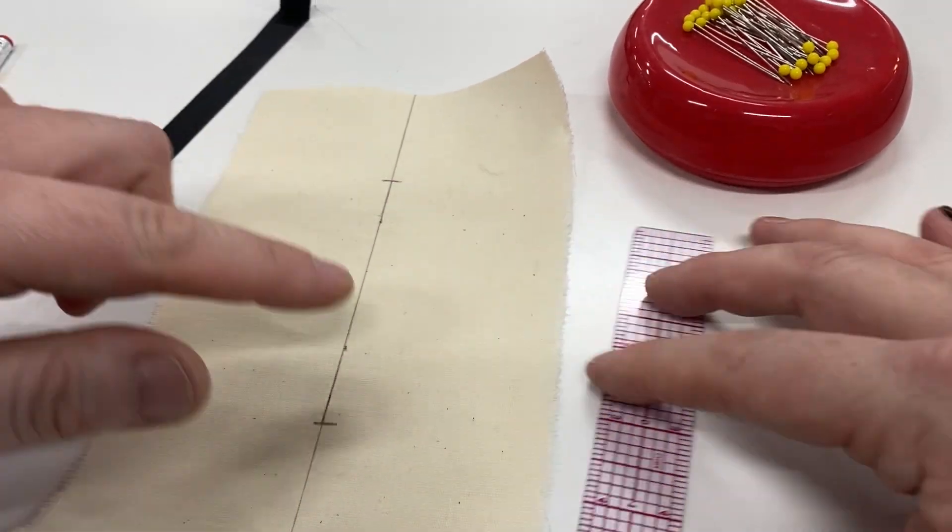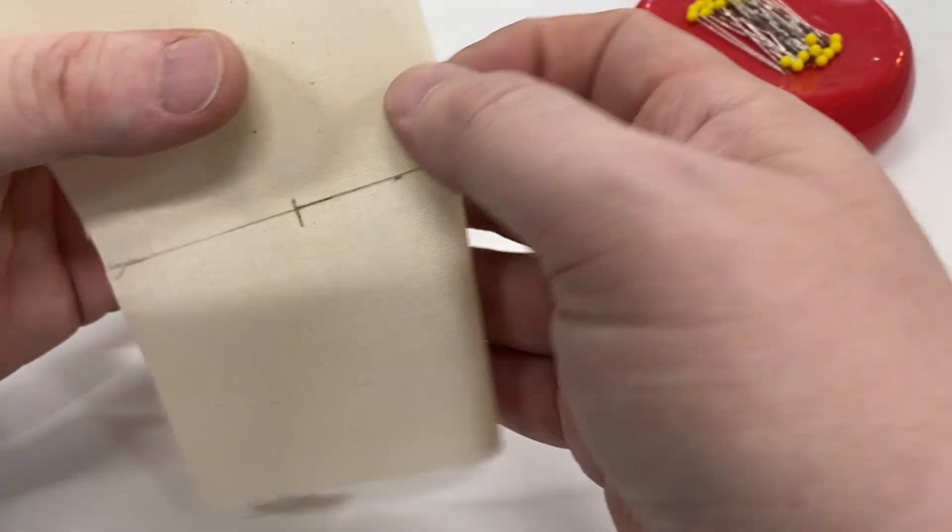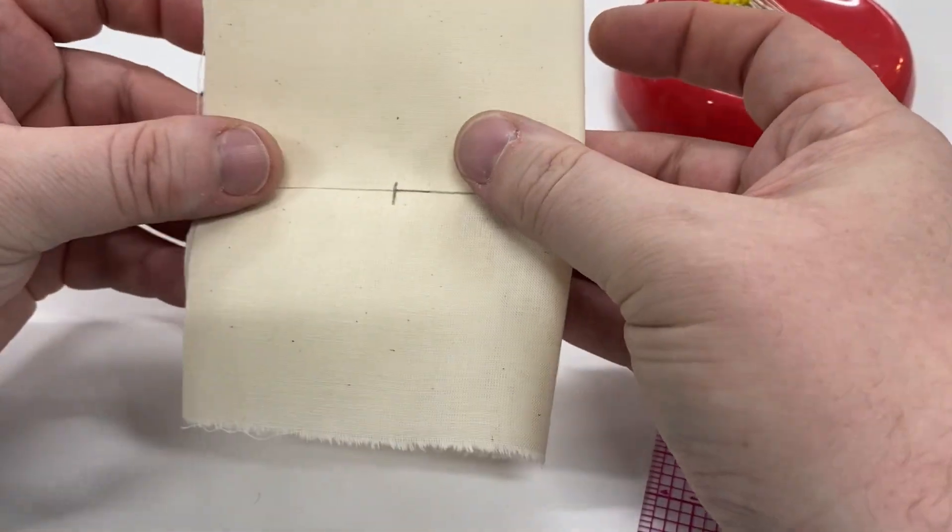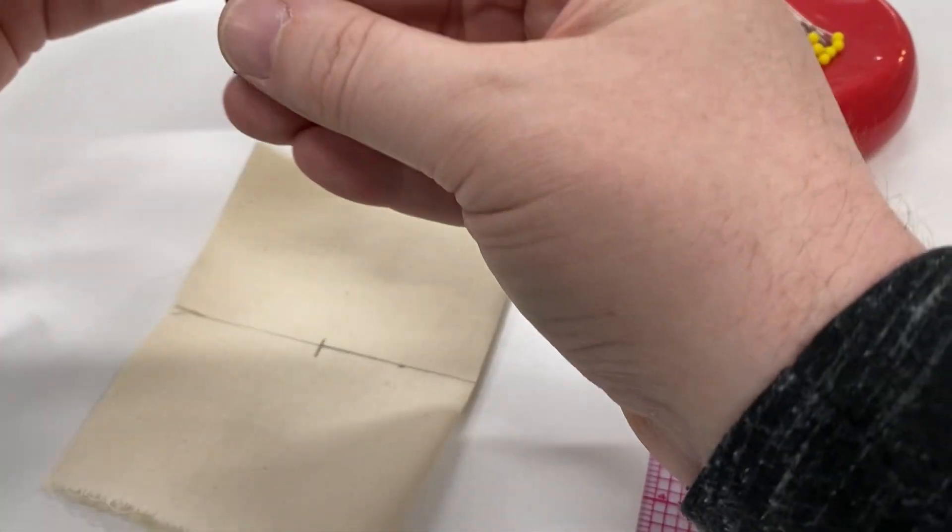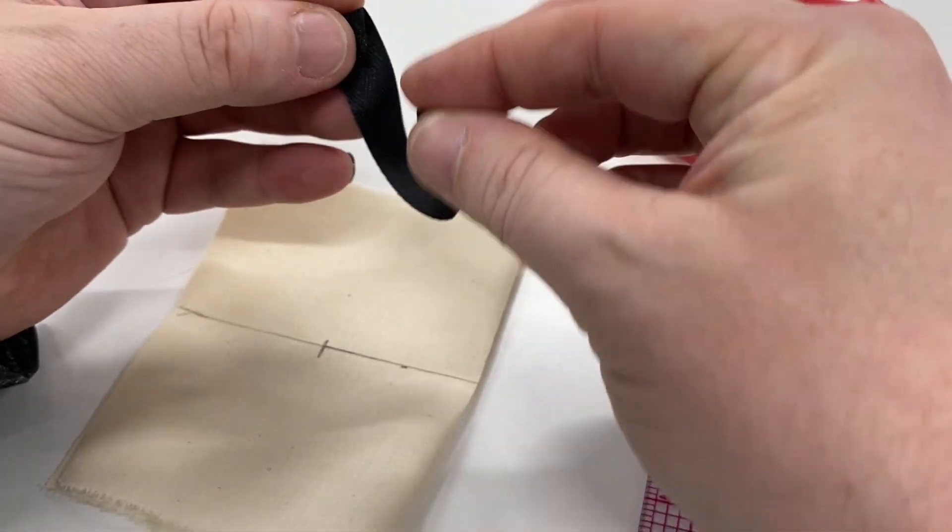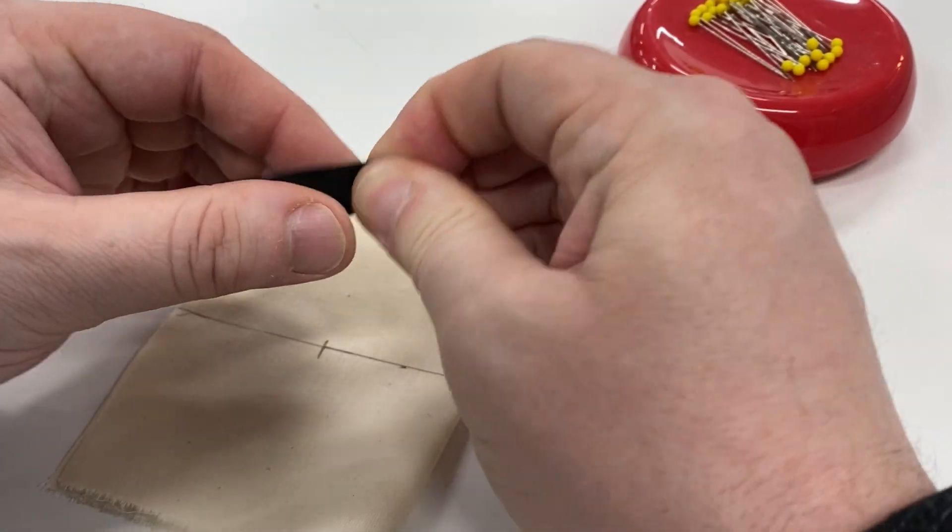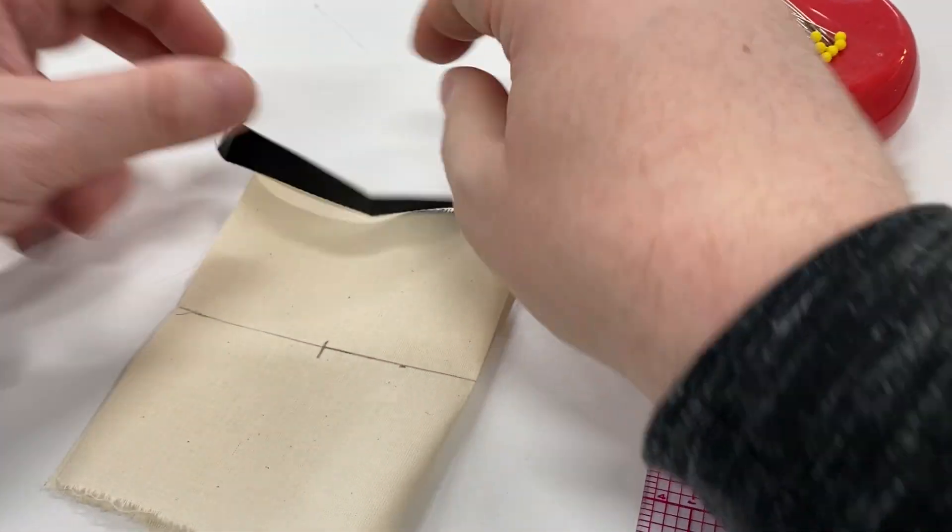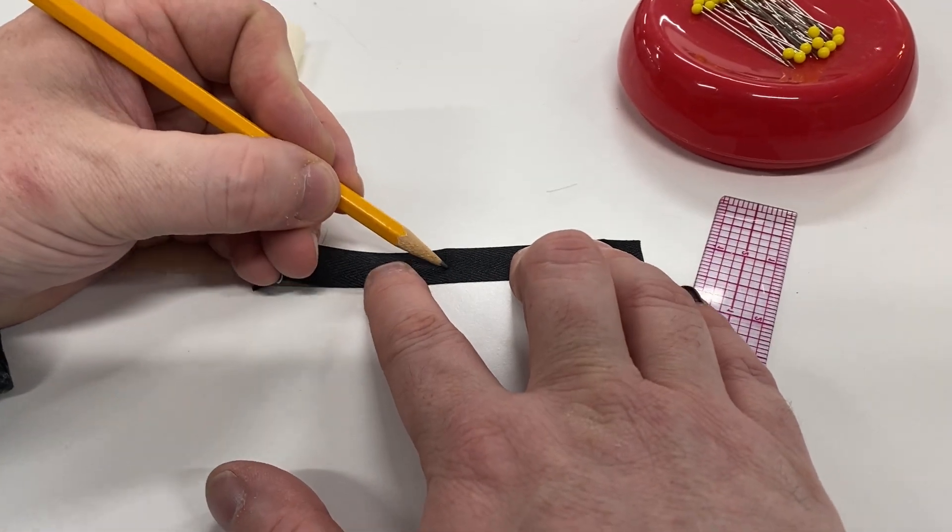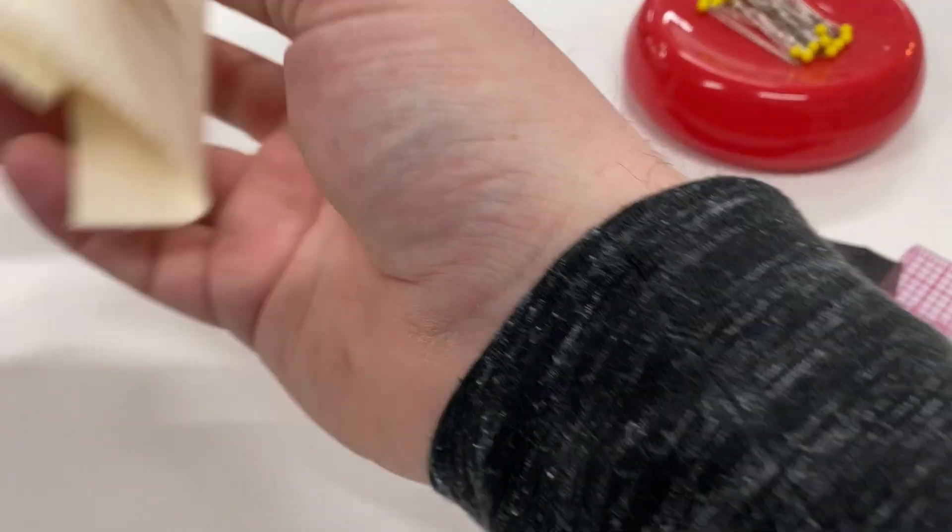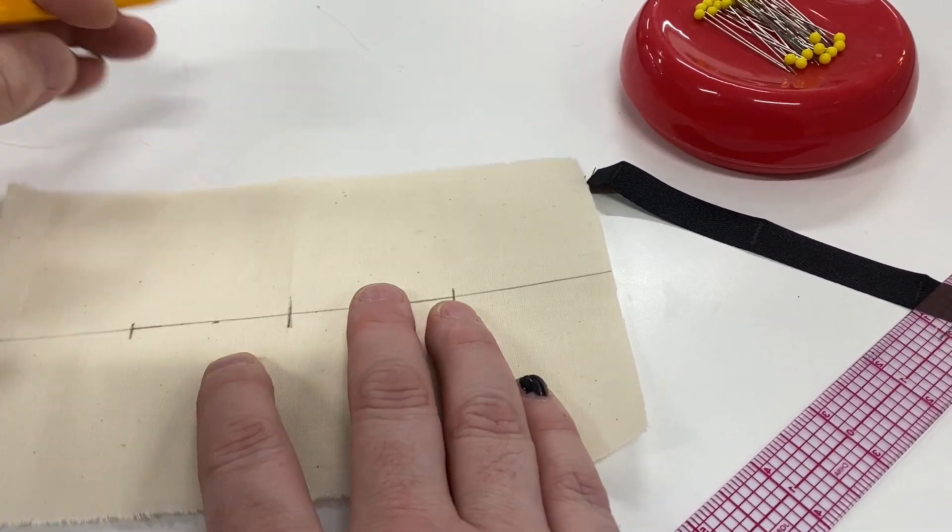And just like with the gather, you're going to want to find the middle of this and the middle of the twill tape. So we're going to fold in half to find our middle point. It's going to be right there. Same thing with our twill tape, we're going to want to fold it in half and find our middle point. That's going to be right there. I'm going to draw a mark on both of these pieces.